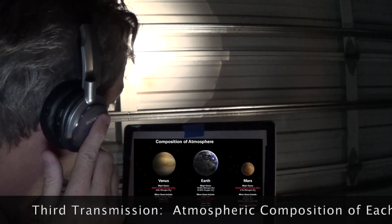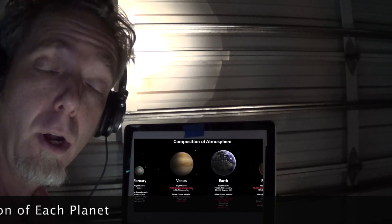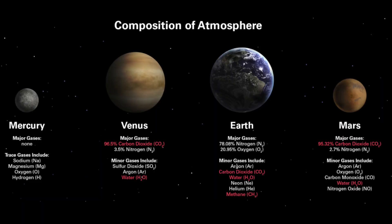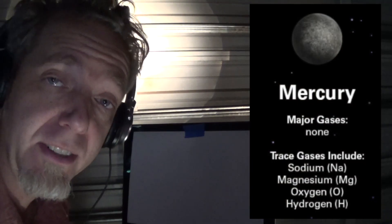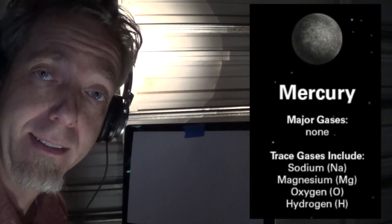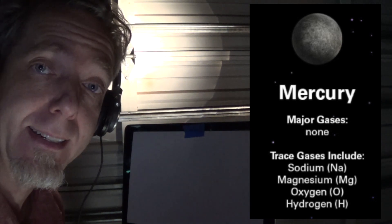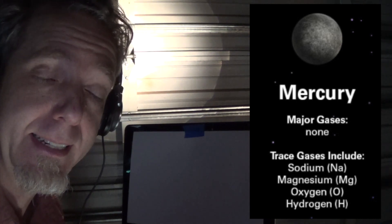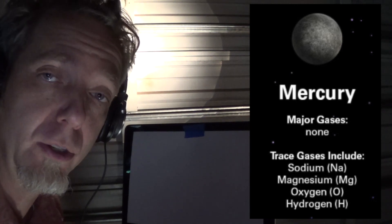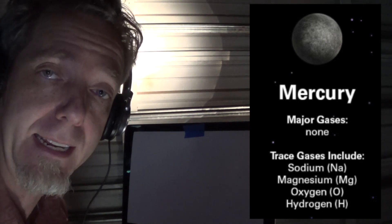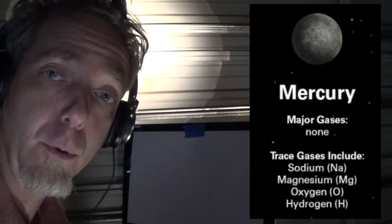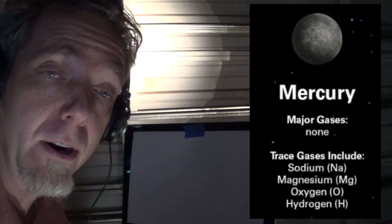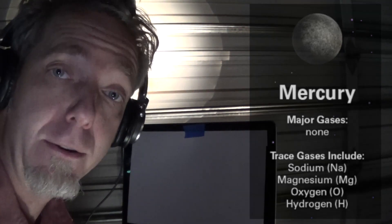We're receiving our third transmission now. This is telling us about the composition of the atmosphere on each planet. Mercury has no major gases — it doesn't have a blanket covering of gases. It does have what's called trace gases, meaning clusters of molecules of different gases scattered throughout the planet in low-lying areas, maybe in a crater here and there. Those gases are sodium, magnesium, oxygen, and hydrogen.